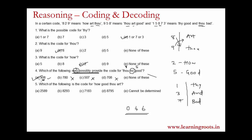Watch out for options like 518 or 538, which might be confusing since we don't know the codes for 1, 3, and 7 — but those cannot be 'no', so they would not be valid. For the final question — which of the following is a code for 'how good thou art'? How corresponds to 2, good corresponds to 5, thou corresponds to 8, and art corresponds to 9. So 2589 in any order should be the answer. Checking the options, 2589 matches, so A is the answer.